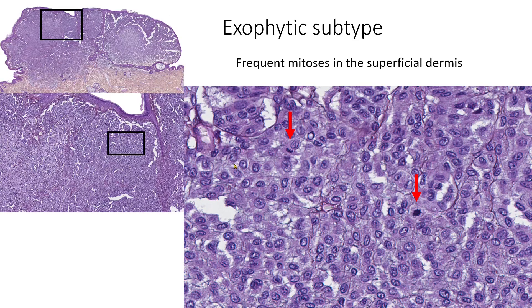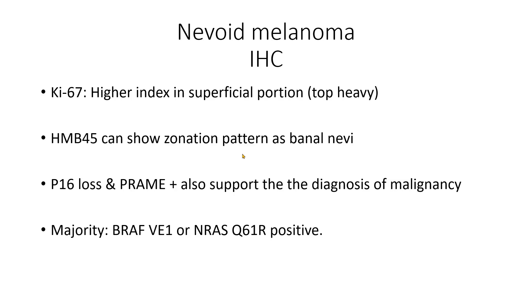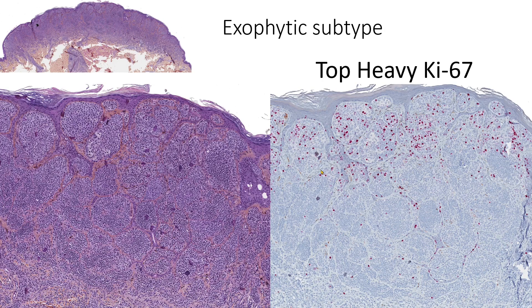Mitotic activity is often frequently found in the superficial dermis. The proliferation marker will often show a top-heavy distribution that matches the presence of mitotic figures in the upper dermis.